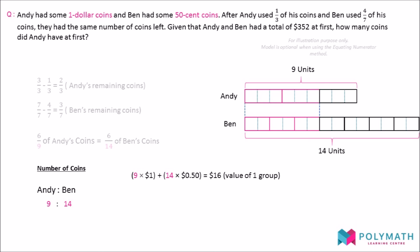Since the value of 1 group is $16, and Andy and Ben had a total of $352 at first, we divide $352 by $16 to find out that there are 22 groups of these coins in total.